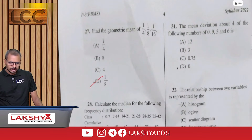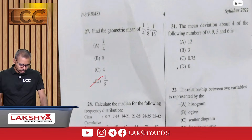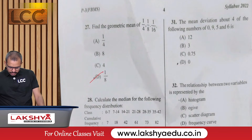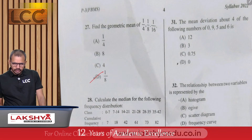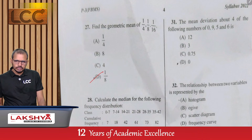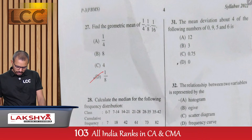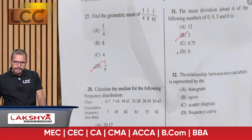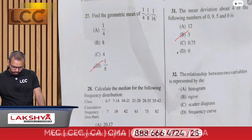Question 31: The mean deviation about 4 of the distribution 0, 9, 5, 6 — option B.